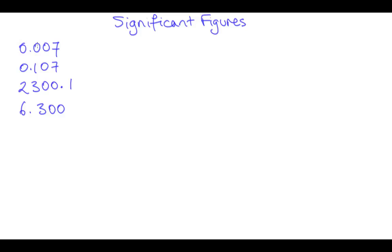So here are some numbers I've written down. First of all, any zeros at the start of a number are not counted. That's because they don't contribute to the magnitude of the quantity. So 0.007 has just one significant figure.